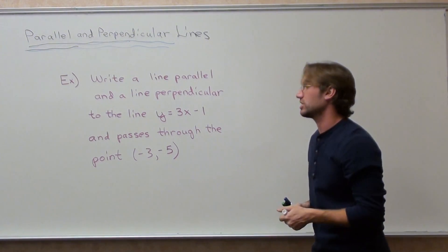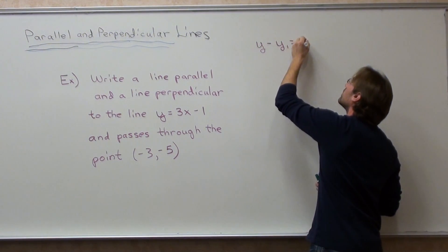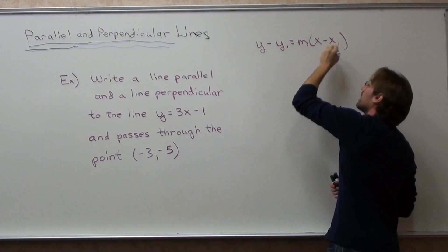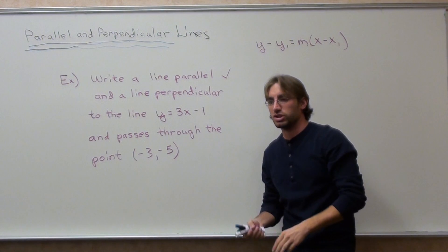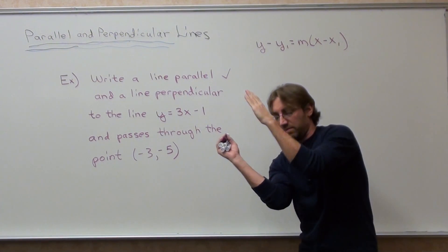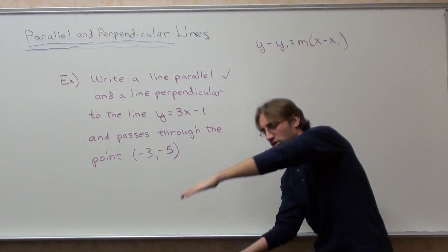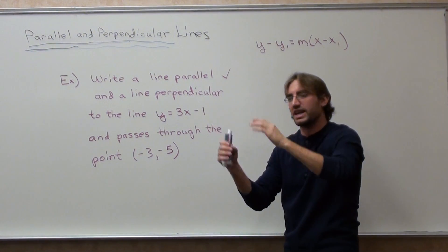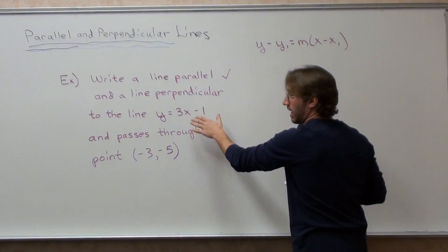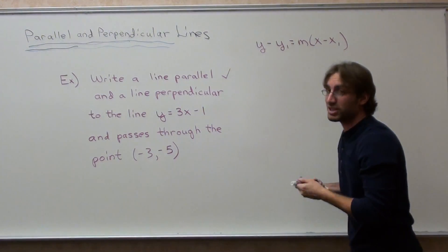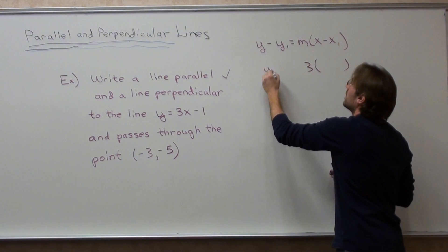Now, in order to do that, I have to use point-slope form. And we're going to start with parallel. Now, when it comes to parallel slopes, the slopes are exactly the same. The lines aren't exactly the same, but the slopes are the same. They're going to go up at the same pace, or they're going to go down at the same pace, but they're going to be exactly the same. So, for my parallel slope, for something that's parallel to this equation right here, my slope is 3. It's just exactly the same.